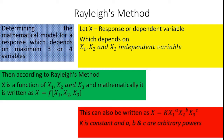Let X be the response or dependent variable, which depends on X1, X2, and X3. X may be a response such as velocity, and X1, X2, X3 are the independent variables — the responsible factors for developing that response. These are called independent variables, and the output is called the response or dependent variable.